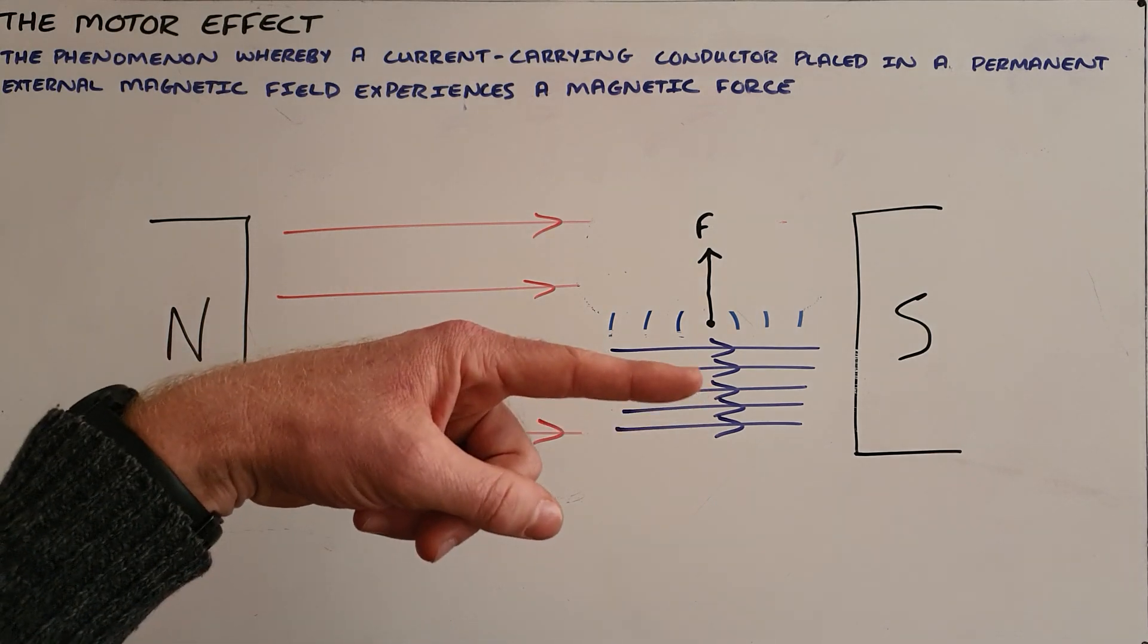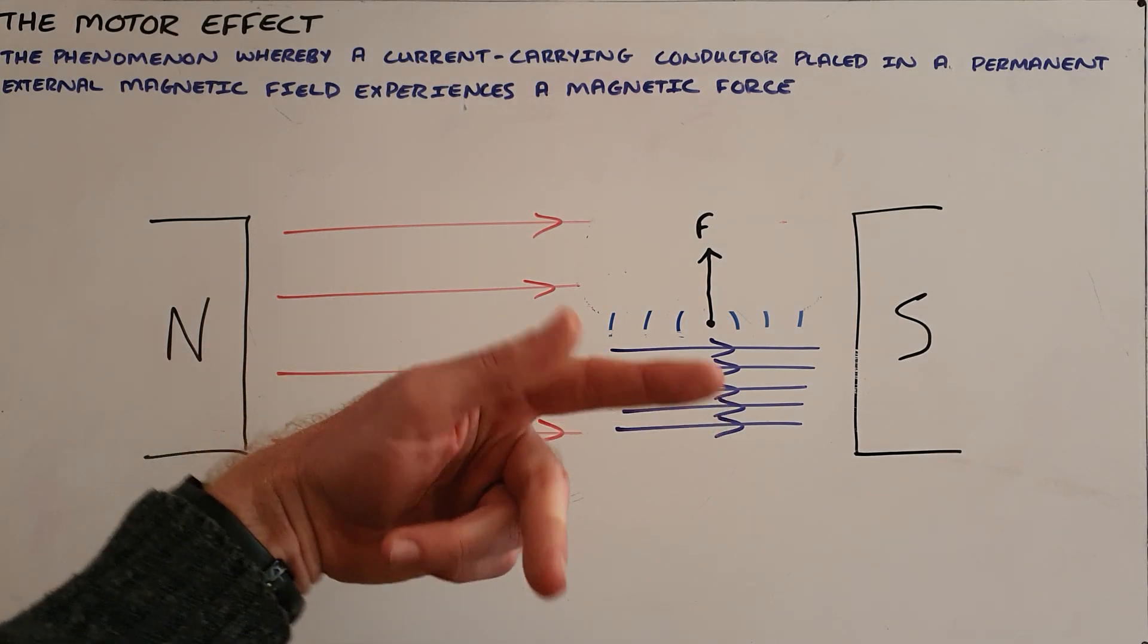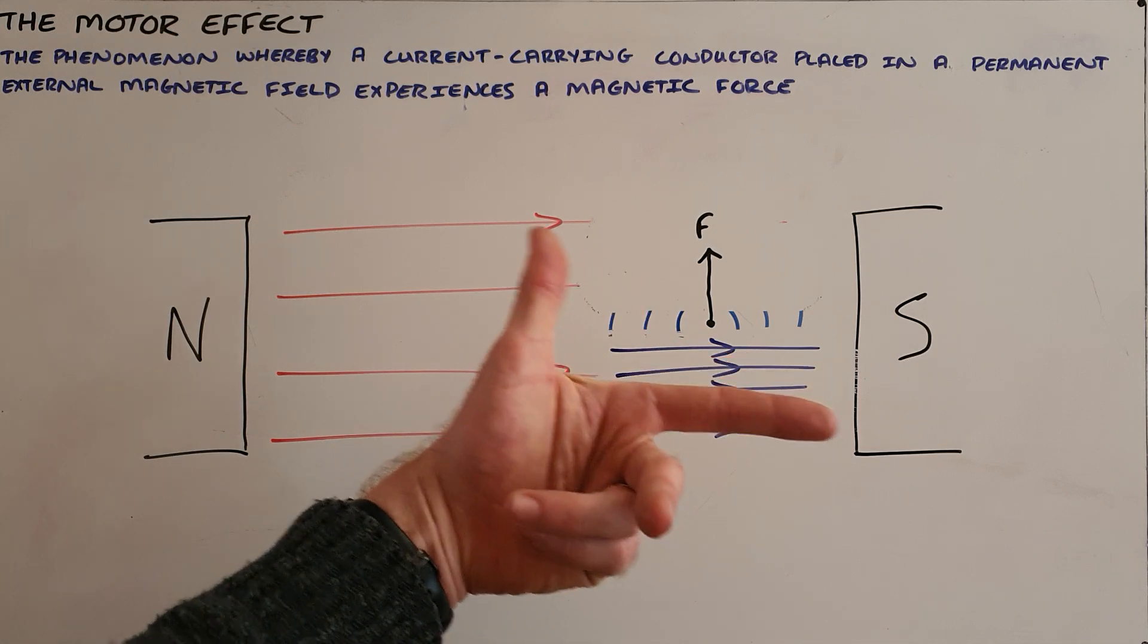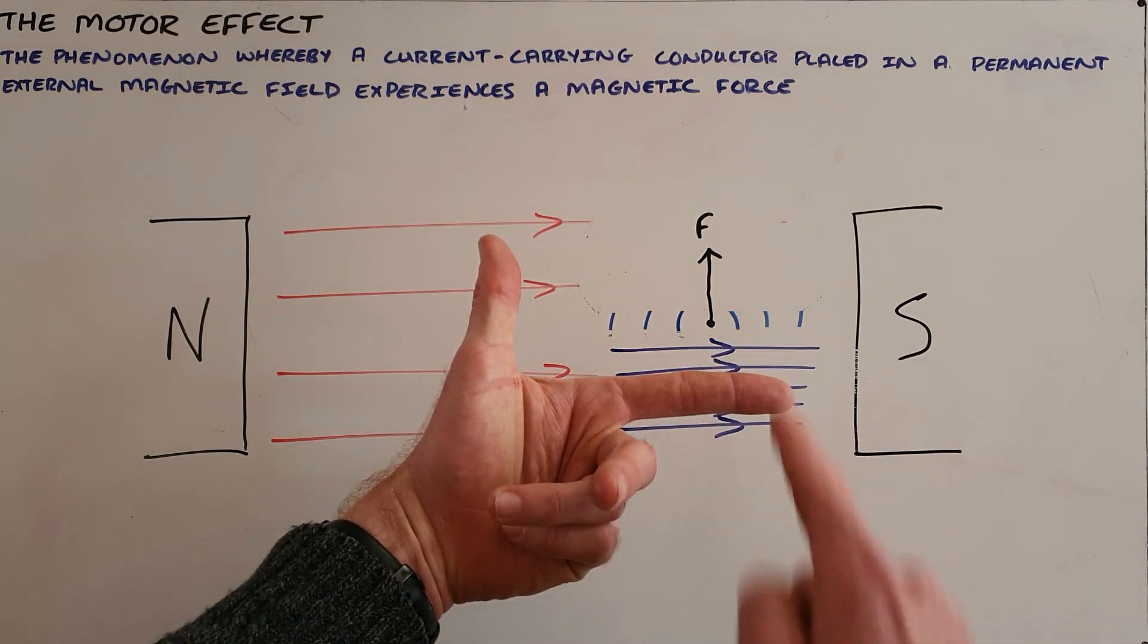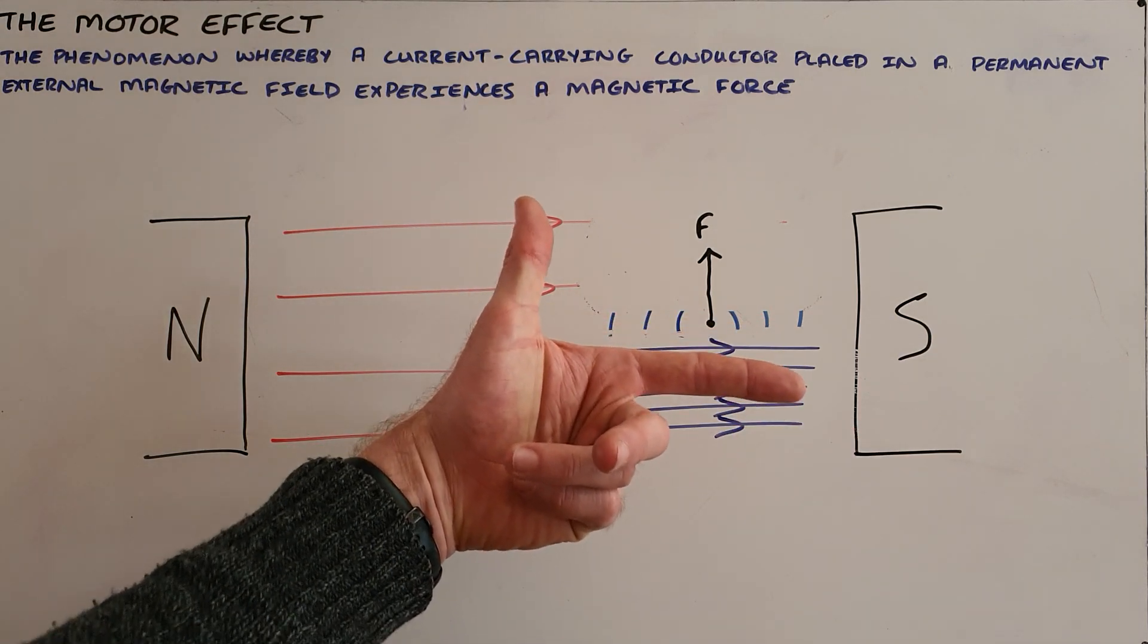What we can do is point our index finger in the direction of the magnetic field, our middle finger in the direction of the current, and our thumb shows us that the force on this conductor is then upwards.